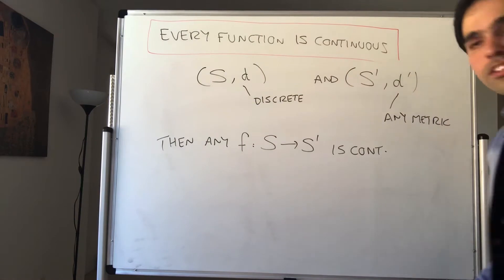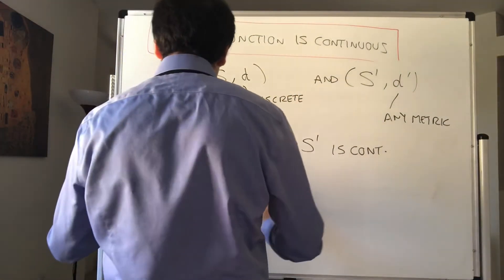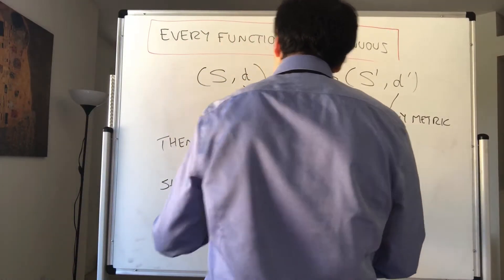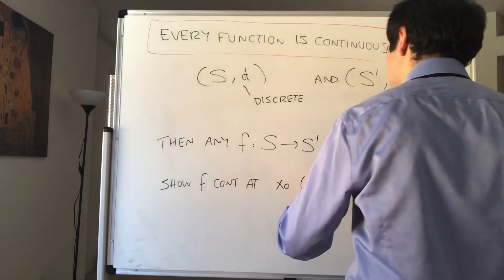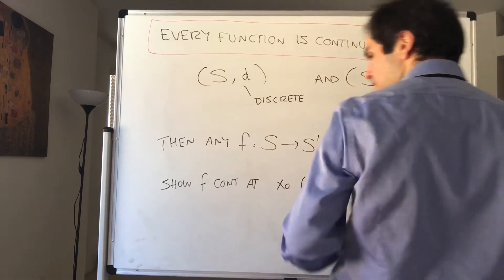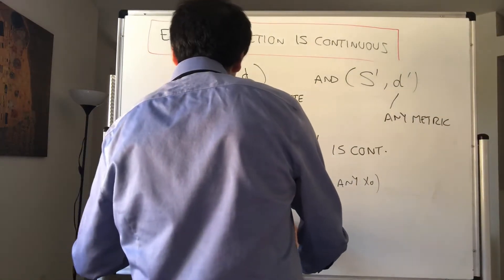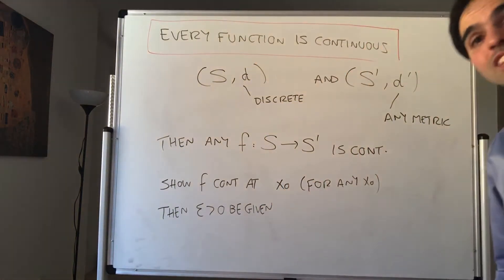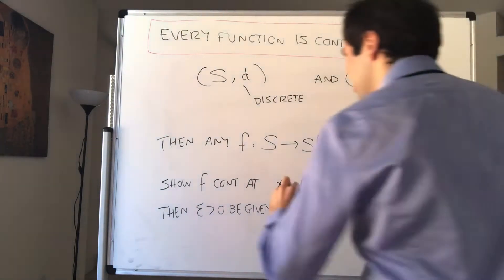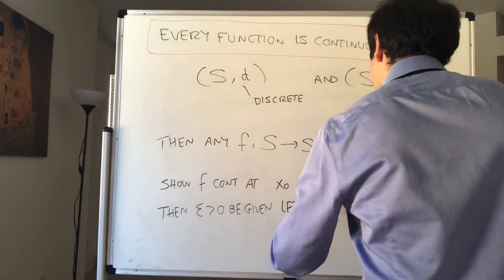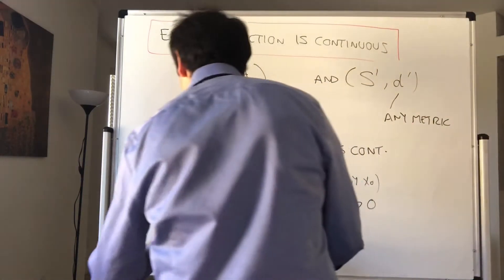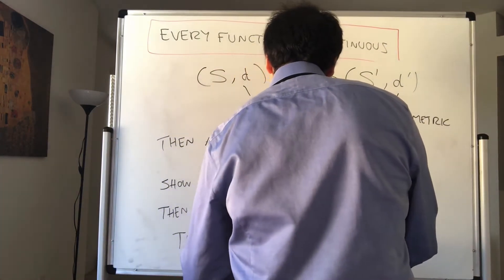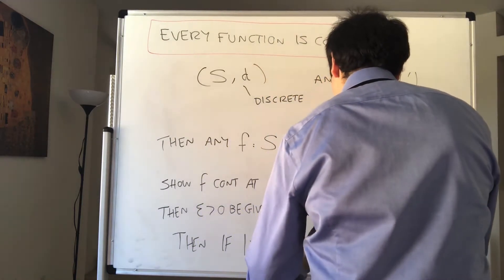How do we show this? Just quickly with epsilon and delta. Let's show that f is continuous at x₀ for any x₀. Let epsilon be given. The key idea is to consider balls with radius one-half, so let delta equal one-half, which is positive.